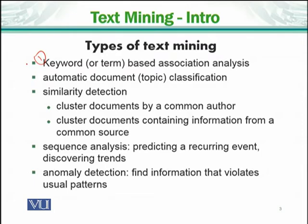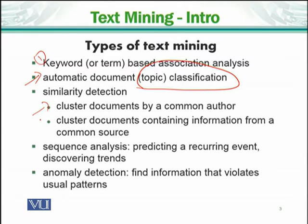The second type is automatic document topic classification. Here we provide a whole topic, which itself can be a combination of keywords. The third type is similarity detection — we can cluster documents by a common author or a common source. For example, we can take all novels by a particular novelist, or all documents from a common source.